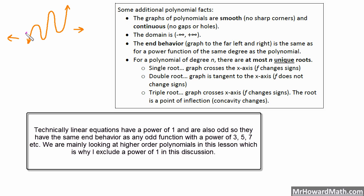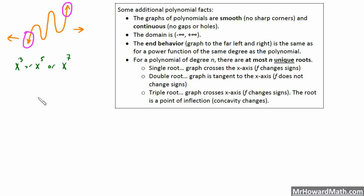So end behavior in this case would be this part right here, and this part right here. That is the end behavior of this function. So a quick review, if we have an x cubed, or x to the 5th, or x to the 7th, etc., we had this behavior, where we were down and left and up and right. So that was a positive one of these. A negative one of these, a power of 3, 5, and 7, had this end behavior, like this. So it was up and to the left and down and to the right.